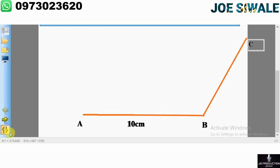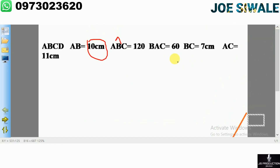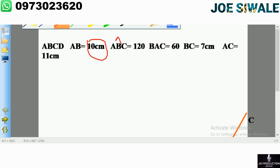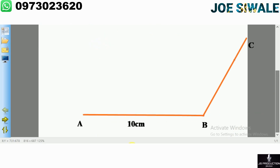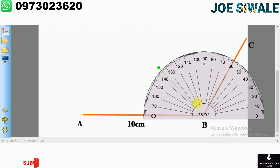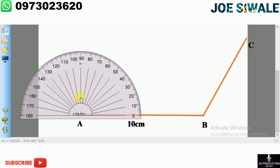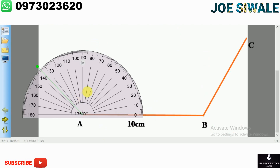Now let us look at the other information. I've been told that angle BAD is equal to 60 degrees. This means the angle at point A is 60 degrees. So I'm going to use my protractor and measure 60 degrees at point A, starting from the right side: 10, 20 — I know my 60 degrees is here. I'll mark this point.